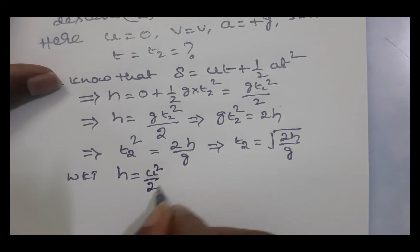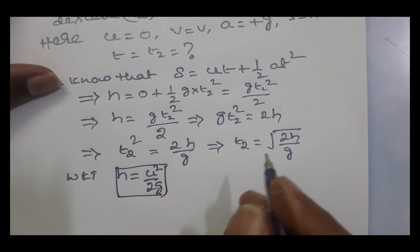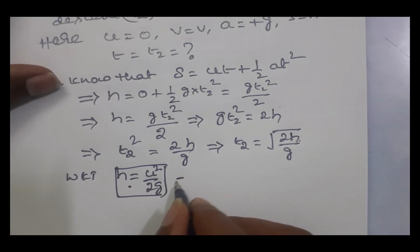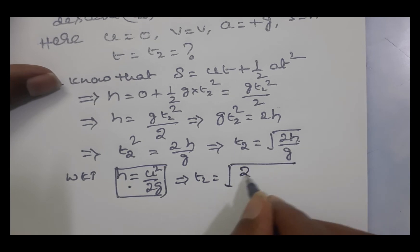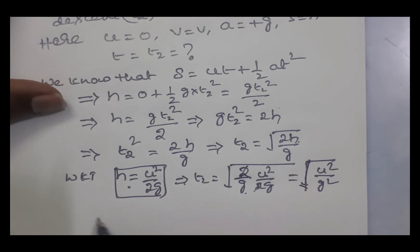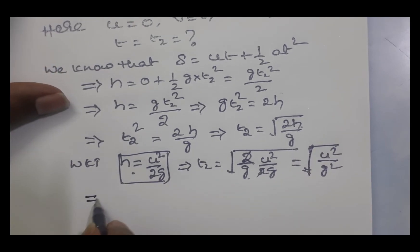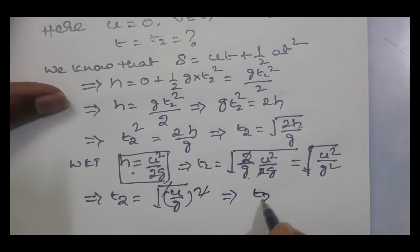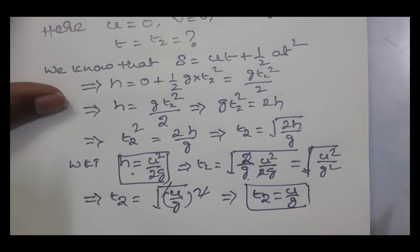We know that the maximum height reached by the body is given by h = u²/2g, which was derived in the previous video. Substituting this in place of h: t2 = √(2/g × u²/2g) = √(u²/g²) = u/g. So time of descent t2 = u/g.